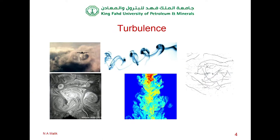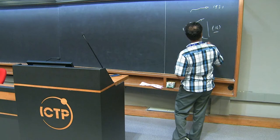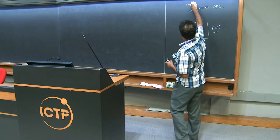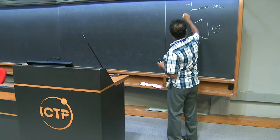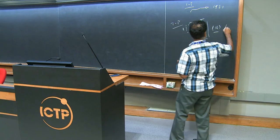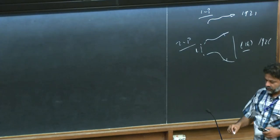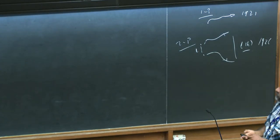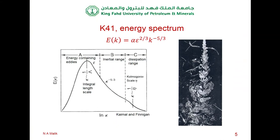In turbulence, how does pair diffusion work? This is called pair diffusion — as distinct from one-particle diffusion. Richardson, in 1926, pioneered this field of pair diffusion almost single-handedly. Later on, of course, all that theory was embedded within Kolmogorov's K41 theory.